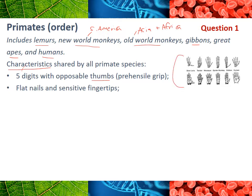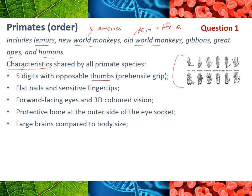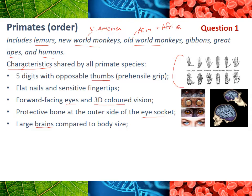All primates have eyes that face forward, giving us 3D coloured vision - not all animals have 3D vision or coloured vision, but all primates do. We all have a protective bone ridge on the edge of our eye socket - if you feel around your eye now you can probably feel that ridge all the way around. All primates also have a large brain in comparison to the size of our bodies. Humans have the largest brain relative to body size, but even other primate species have quite large brains compared to animals like sheep or rats.